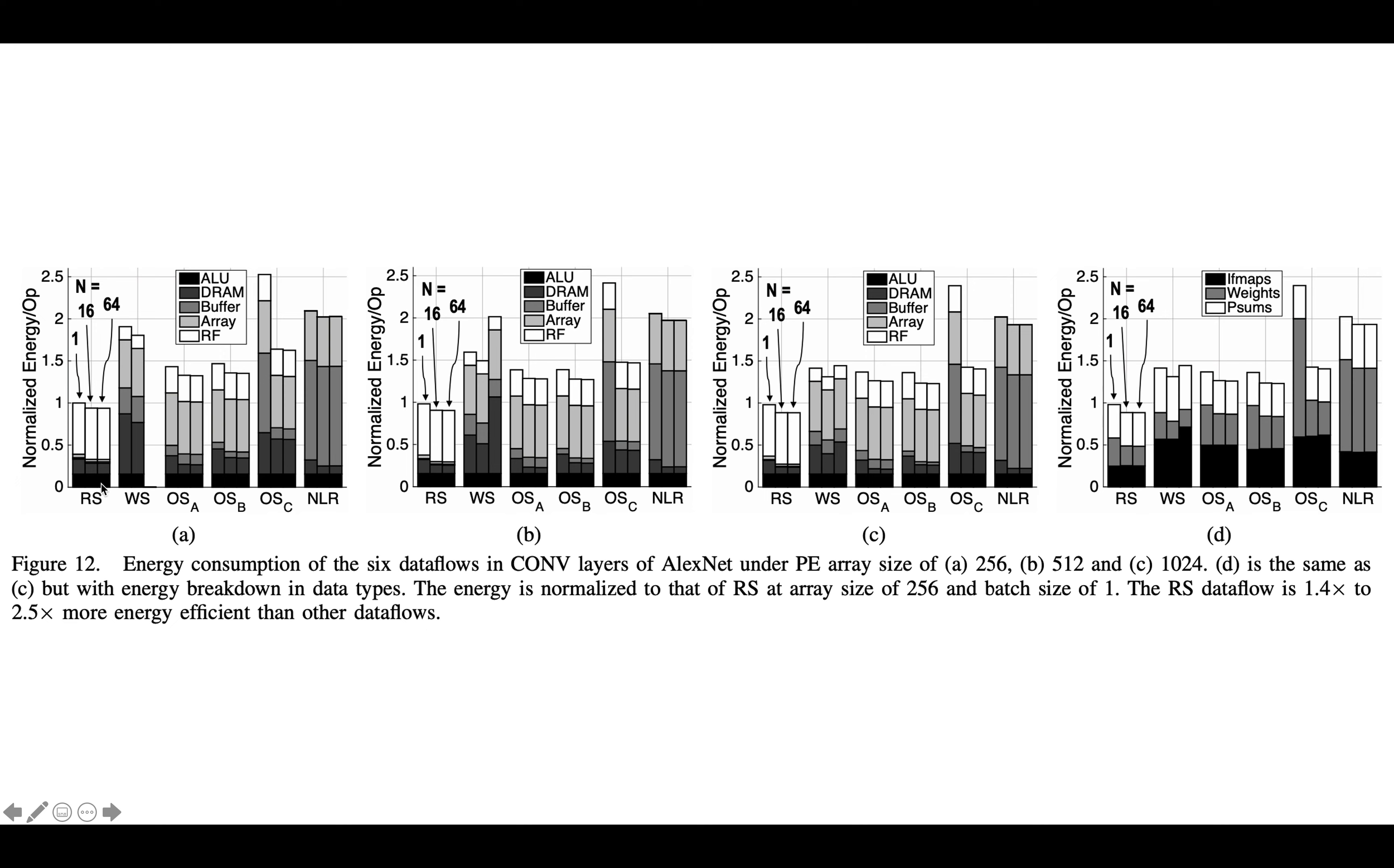And the other data flows, they've got row stationary, which they're normalizing to with batch size of 1. And the other data flows that they're advocating for are what they call weight stationary, output stationary, and there's a few different flavors, A, B, and C of output stationary, and no local reuse